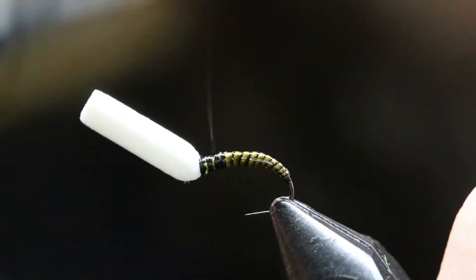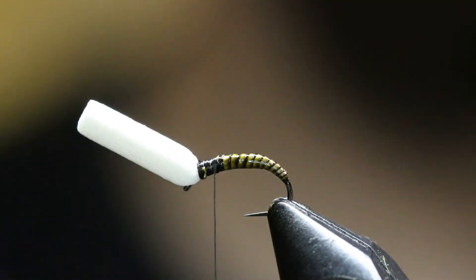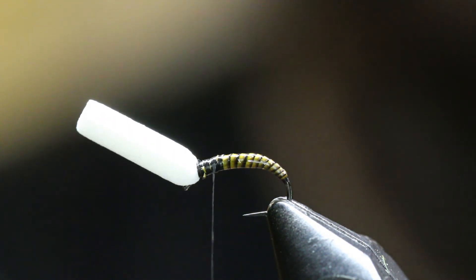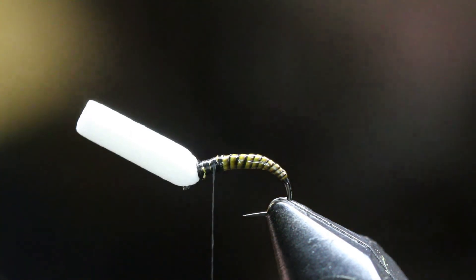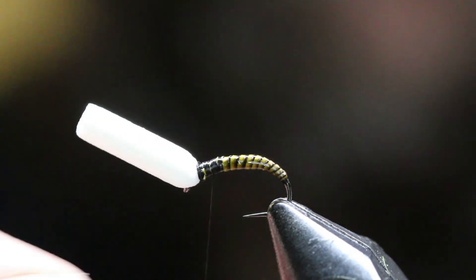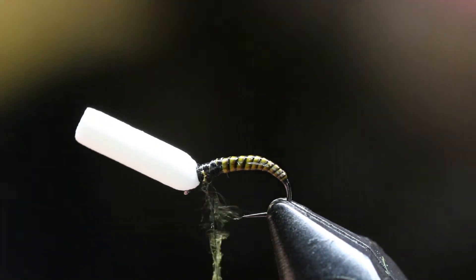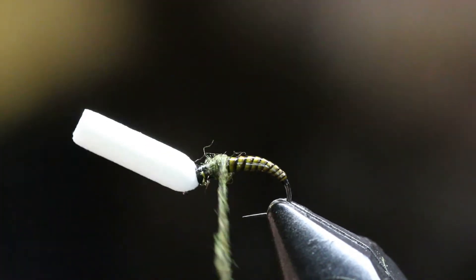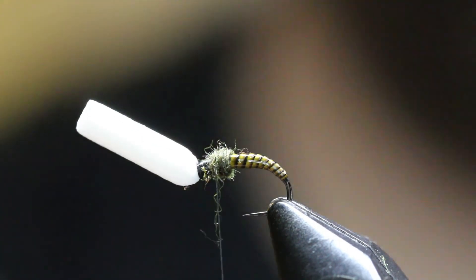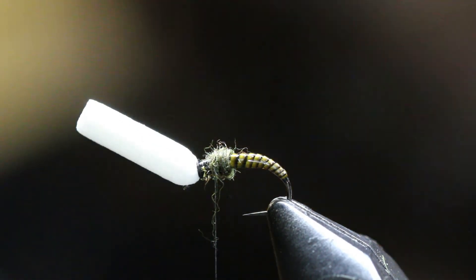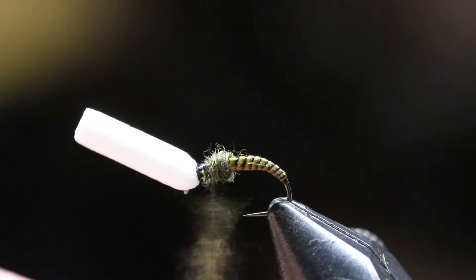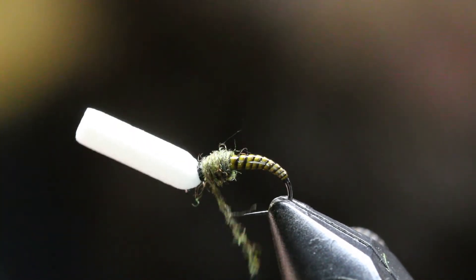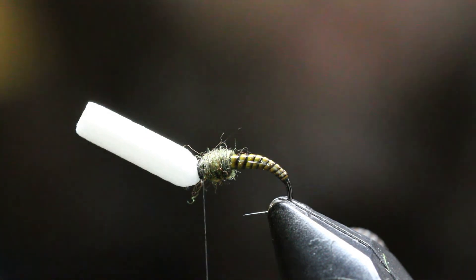All right, we are almost there, guys. Now time for some dry fly dubbing. This is the super fine Air Fly dubbing in olive for this, just because olive is by far my favorite dubbing color. Nice little color there, a little bit more. All right, now we left room for our soft hackle.